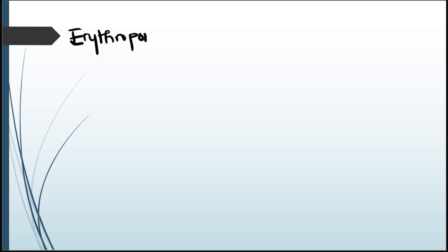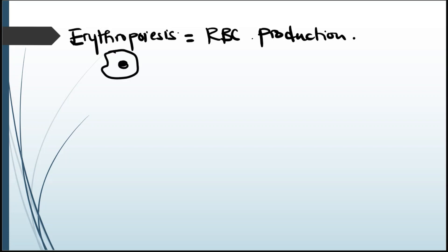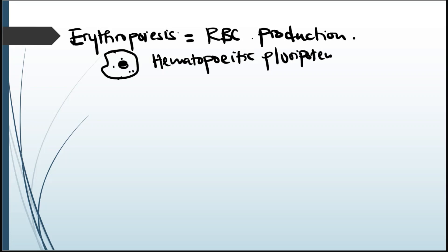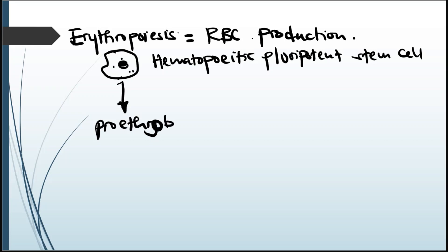In our last video we were talking about erythropoiesis. Erythropoiesis is red blood cell production in the bone marrow. The stages of red blood cell development begin from the stem cell — this is the hematopoietic multipotent stem cell. This is going to differentiate into what we call a pro-erythroblast.